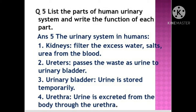Question 5: List the parts of the human urinary system and write the functions of each part. Answer: The urinary system consists of kidneys, ureter, urinary bladder, and urethra. The two kidneys filter excess water, salts, and urea from the blood to make urine. The ureter passes the waste as urine to the urinary bladder. The urinary bladder stores urine temporarily. The urethra excretes urine from the body.